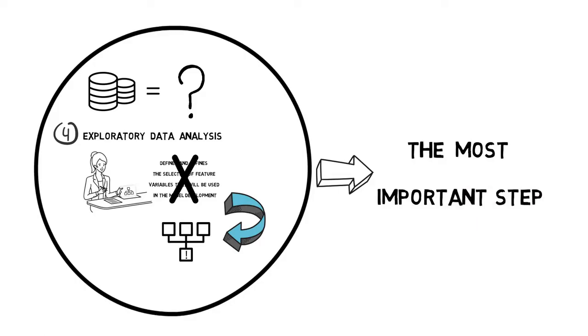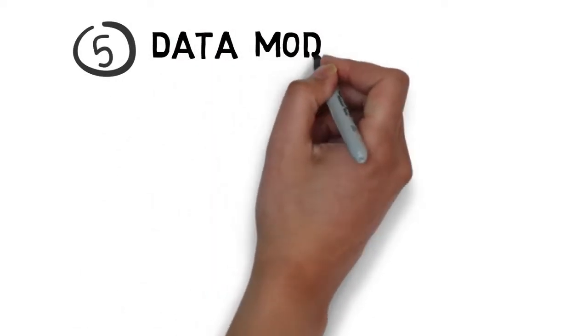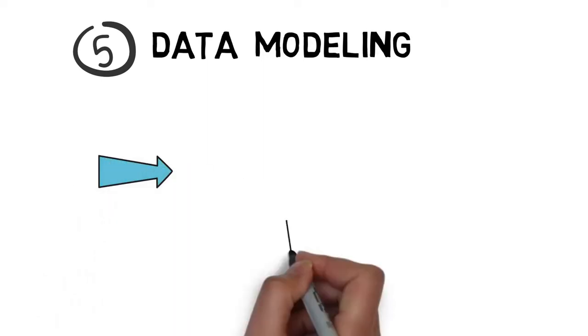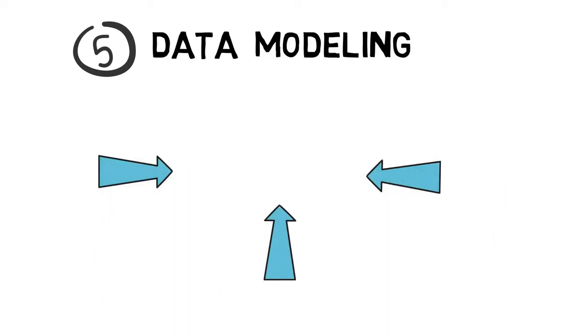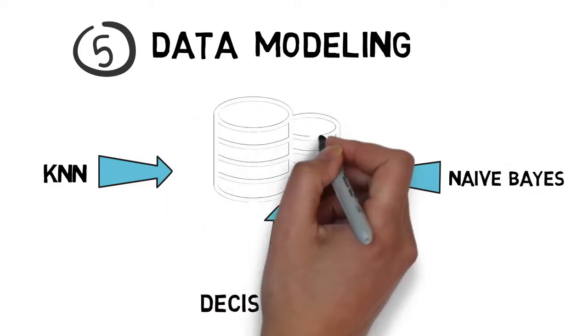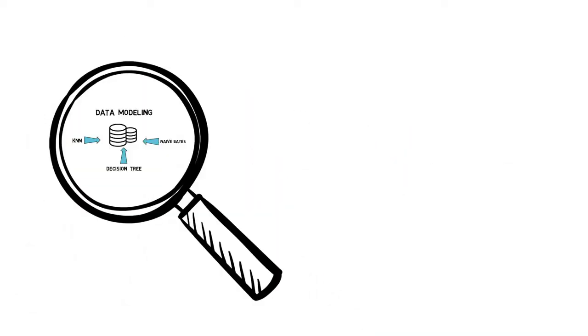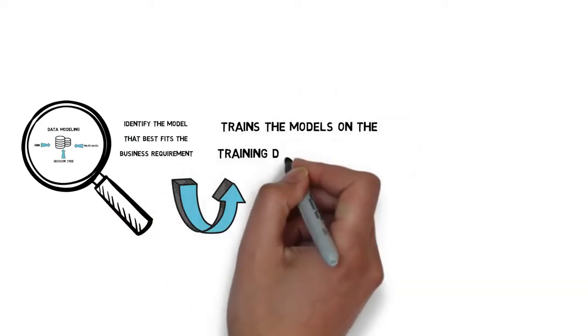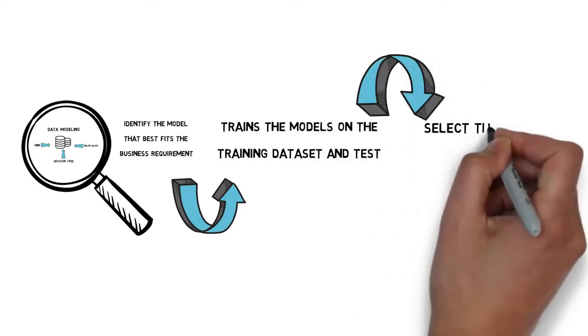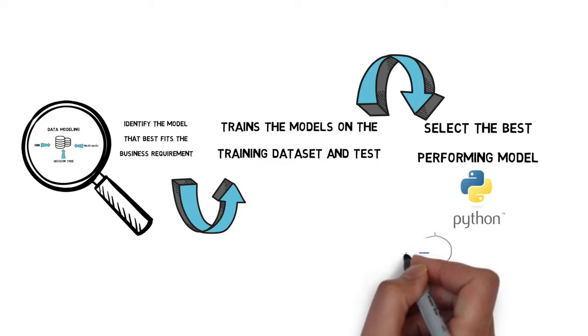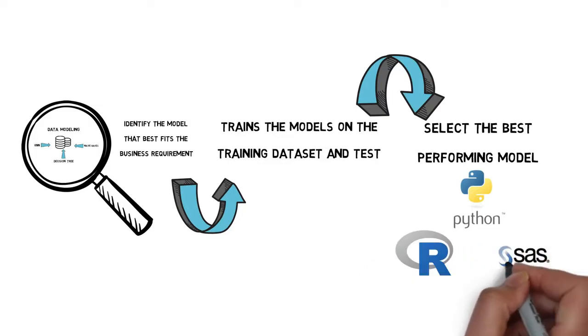Now she proceeds to the core activity of a data science project, which is data modeling. She repetitively applies diverse machine learning techniques like k-NN, decision tree, Naive Bayes to the data to identify the model that best fits the business requirement. She trains the models on the training dataset and tests them to select the best performing model. Emma prefers Python for modeling the data; however, it can also be done using R and SAS.